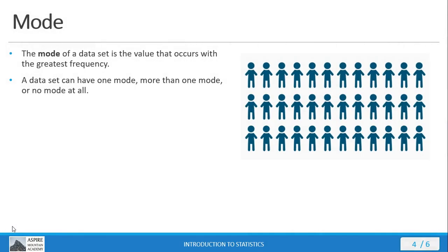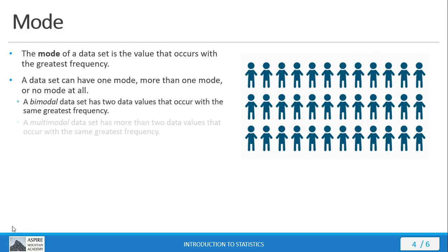The mode is another measure of center and the mode of a data set is simply that value which occurs with the greatest frequency. This definition makes the mode a different measure of center because you can have one mode, more than one mode, or just simply no mode at all. Now when a data set has two values that occur with the same greatest frequency, we call that data set bimodal because it has two modes. Now if you have a data set that has more than two values that occur with the same greatest frequency, then you have what's called a multimodal data set.